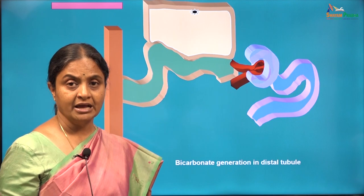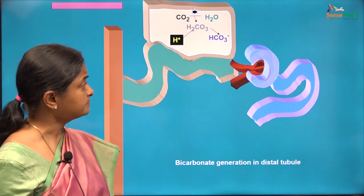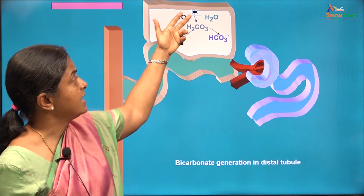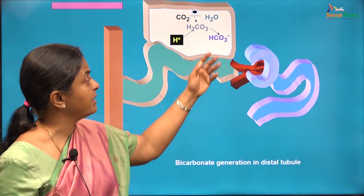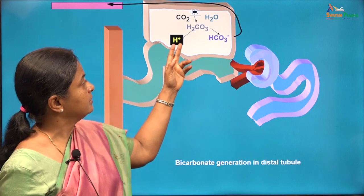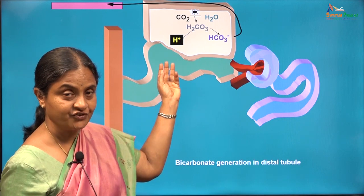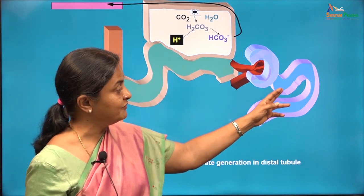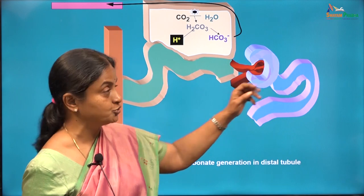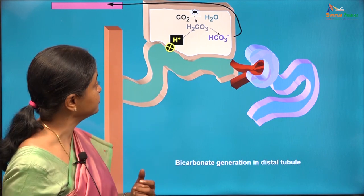The process of bicarbonate generation is the same as in the proximal tubular cell. The forward mode of the carbonic anhydrase reaction goes on in the distal tubular cell too and the bicarbonate formed is given to plasma. Just like in the proximal tubular cell, if this reaction is to proceed then the protons formed must be eliminated from the cell. In the proximal tubule we had the sodium-hydrogen exchanger; in the distal tubule we have a proton pump which can extrude the protons.